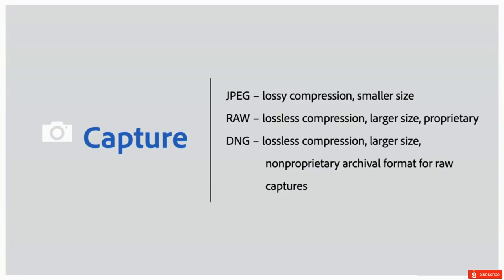Starting with capture formats — when you start with a photograph, the most common file formats are JPEG and RAW. JPEG is currently the most widely used file format in photography because it's the default for mobile devices and is almost always an option on a digital camera. Its popularity is based primarily on the fact that JPEG files are really small, so you can store a large number of photos on a single device or card and they can be written to those devices very quickly. However, in order to decrease file size, the JPEG format throws away information through a process called lossy compression.